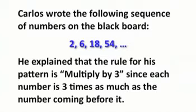Carlos wrote the following sequence of numbers on the blackboard: 2, 6, 18, 54. He explained that the rule for his pattern is multiply by 3 since each number is three times as much as the number coming before it.